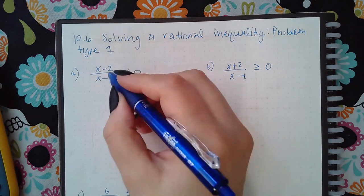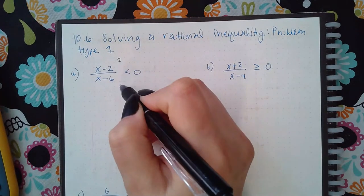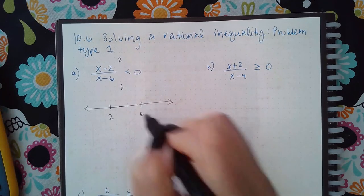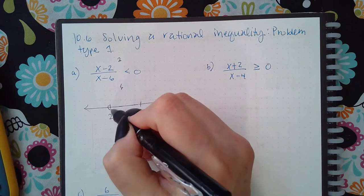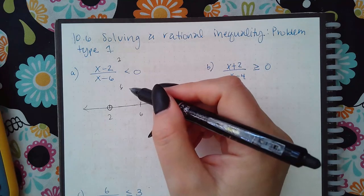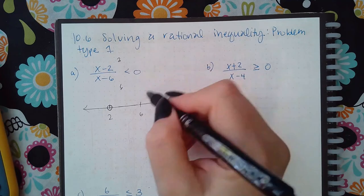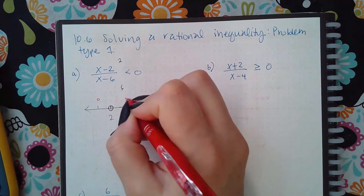If I set the numerator equal to zero I get the value two, and if I set the denominator equal to zero I get the value six. The symbol here applies to the two, and since there is no bar, it will have an open dot. The six will always have an open dot because it came from the denominator — it automatically gets a parenthesis.